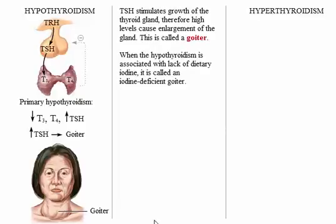When the hypothyroidism is associated with lack of dietary iodine, it is called an iodine-deficient goiter. Such goiters used to be common in parts of the Midwestern United States due to low iodine concentrations in the soil. The introduction of iodized salt helped reduce both the incidence of iodine-deficient primary hypothyroidism and the number of such goiters. Click the image of the patient with the goiter to continue.